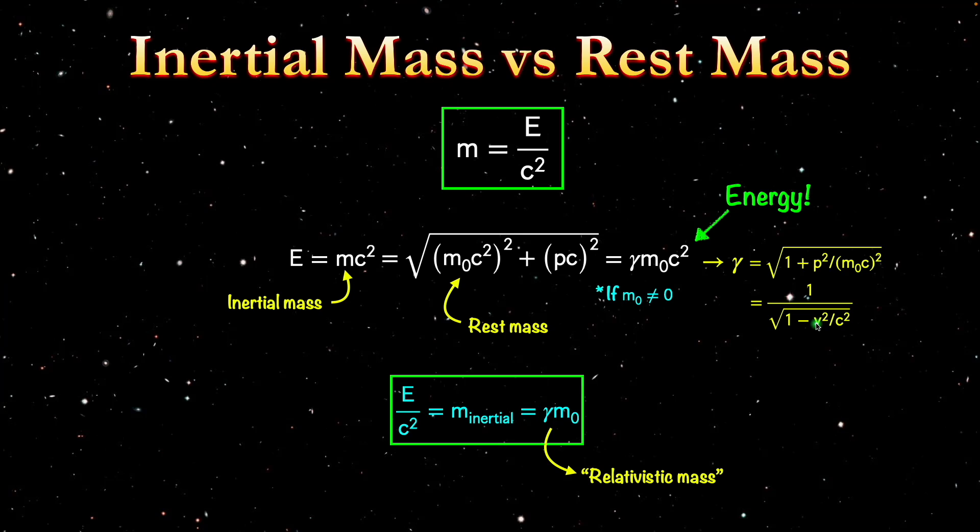It's not constant. Now we didn't notice this before, because this factor gamma is very close to 1 until you start reaching speeds comparable to the speed of light.